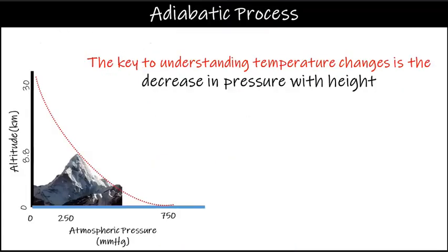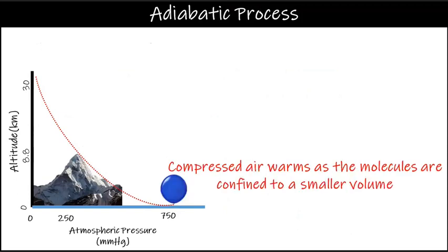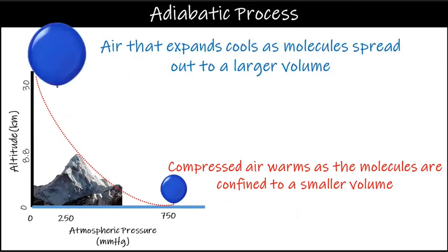The key to understanding temperature changes in the adiabatic process is the decrease in pressure with height. As air rises, it will experience less pressure and will expand. Near the Earth's surface, pressure in the environment will be more, and the environment pressure will compress the balloon or air parcel. Compressed air warms as the molecules are confined to a smaller volume. If you lift the air parcel or balloon, it will find itself in a place where the surrounding environmental air pressure is lower, because pressure decreases with height.